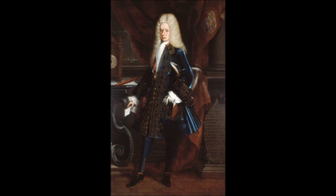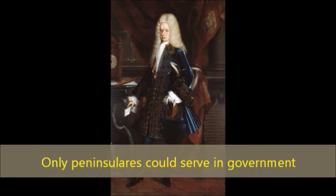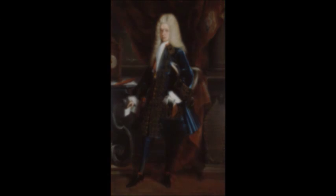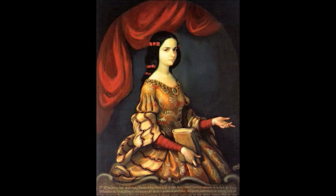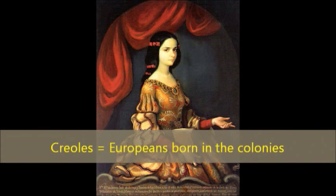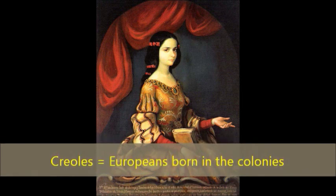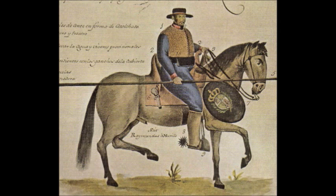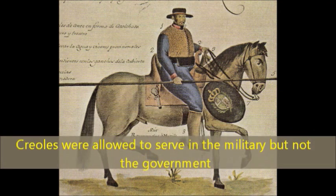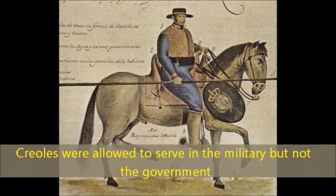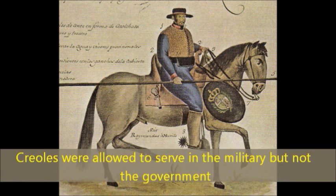The Peninsulares were the only people in Latin American colonies who were allowed to hold high office in the government. Below them on the social ladder were the Creoles — Spanish or Portuguese people who were born to white parents in the New World. They were allowed to serve in the military, but not in the government. Despite the fact that they were of the same race, the social class of these two groups was sharply divided. The Creoles and the Peninsulares controlled all the power and wealth in Latin America and didn't share very much with the people who were below them.